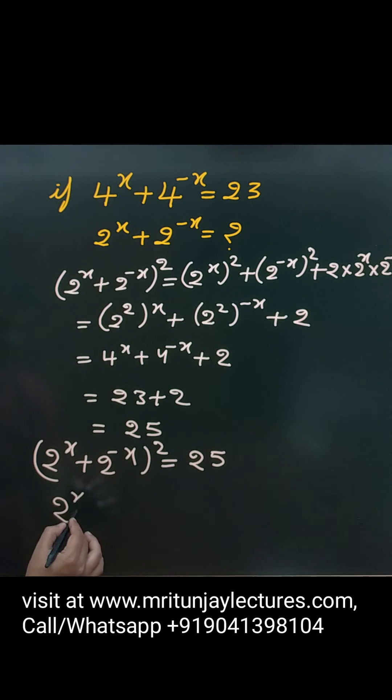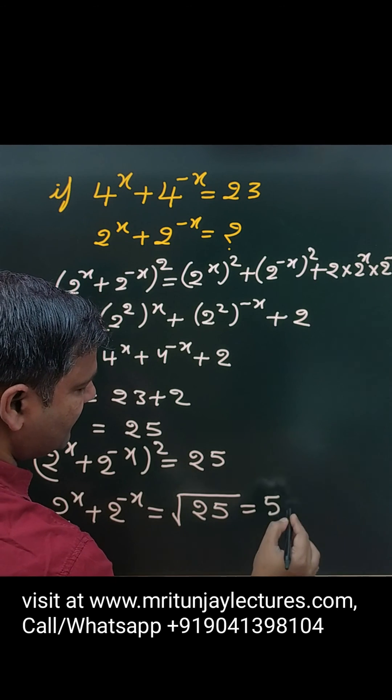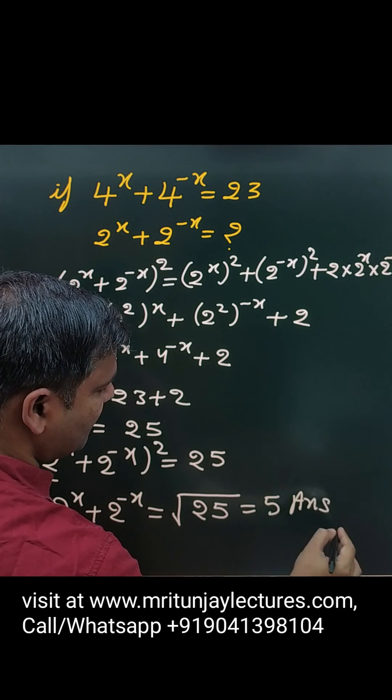So you can say that 2 to power x plus 2 to power minus x will equal to under root 25. Then what about that value? Simply, 5 is the right answer.